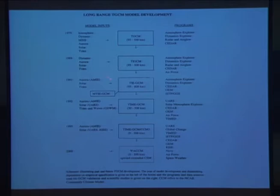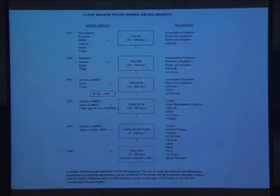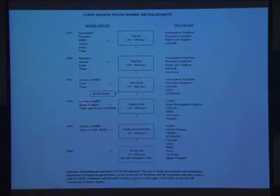We then included the ionosphere in a self-consistent fashion — Art Richmond and I came up with a scheme — and it became the TI-GCM. Then Art Richmond and Cicely Ridley added a dynamo, and it became the Thermosphere-Ionosphere Electrodynamic General Circulation Model (TIE-GCM). This model has been developed further by Stan Solomon, Ben Foster, and the whole group at NCAR, and is now available online to download and run. We also worked with Christoph Pamerant to couple it quickly to the inner magnetosphere — the MTI-GCM. When the UARS satellite made measurements in the mesosphere region, we extended the model down to 30 kilometers, covering 30 to 500 kilometers. The required inputs remained aurora and solar forcing.